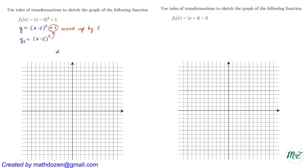Looking at y2, there is x minus 2 in the formula. Subtracting 2 directly from x is equivalent to moving the graph right by 2 units. If you remove that minus 2, you get y3, which is just x². To go from the graph of y3 to the graph of y2, we simply move the graph to the right by 2 units.